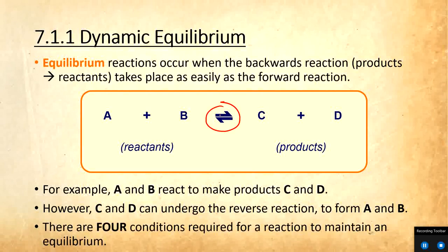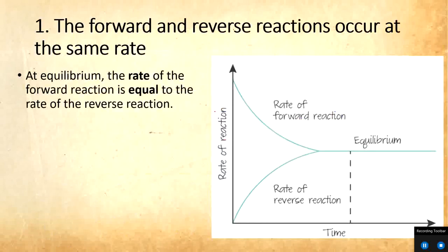We're going to study the four main conditions required for a reaction to maintain an equilibrium. So that means this is all happening simultaneously. The forward reaction is taking place at the same time the reverse reaction is taking place within this beaker or whatever container we're looking at. The first statement is that the forward and reverse reactions occur at the same rate. So at equilibrium, the rate of the forward reaction is equal to the rate of the reverse reaction.